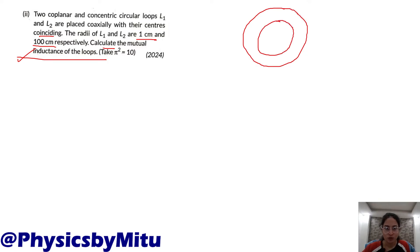These are the two loops, concentric and coplanar. Coplanar means in a plane, concentric means center same. L1 and L2. L1 has radius 1 centimeter, this is L1. L2 has radius 100 centimeters, this is L2.